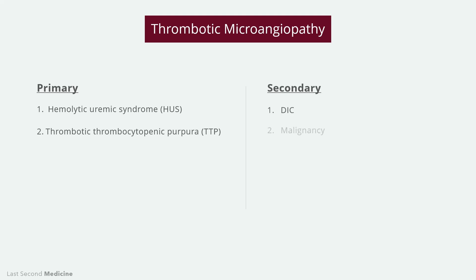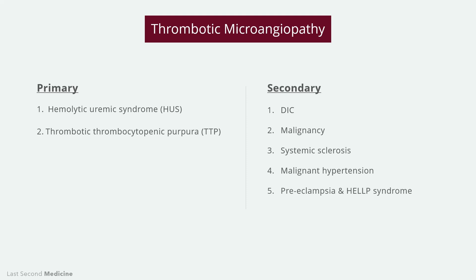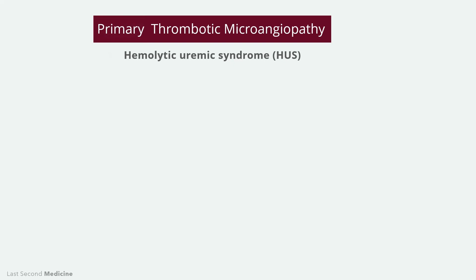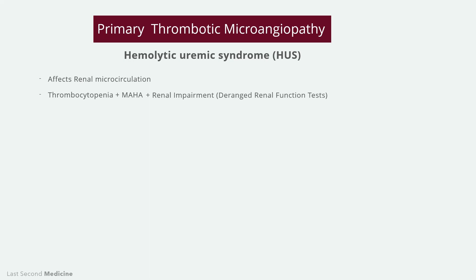Systemic disorders causing thrombotic microangiopathies include DIC, malignancy, systemic sclerosis, malignant hypertension, preeclampsia, and HELLP syndrome. Coming back to our main topic, hemolytic uremic syndrome — HUS predominantly affects the renal microcirculation, and so, along with thrombocytopenia and hemolytic anemia, you will get renal impairment.